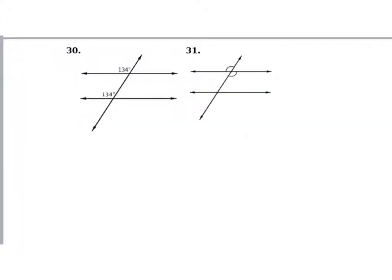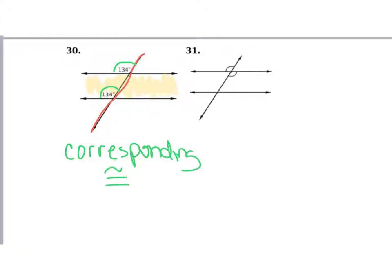Number 30: looking at two angles, they are congruent and in corresponding positions — both above the parallel lines and both to the left of the transversal. So they are corresponding angles and they are congruent. That is a property corresponding angles have when lines are parallel, so yes, they are parallel.